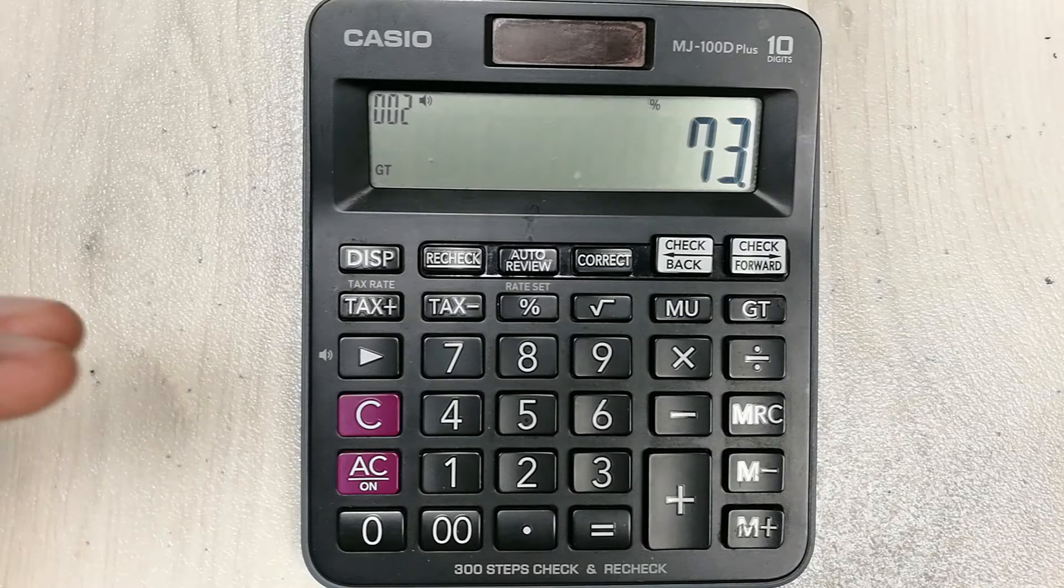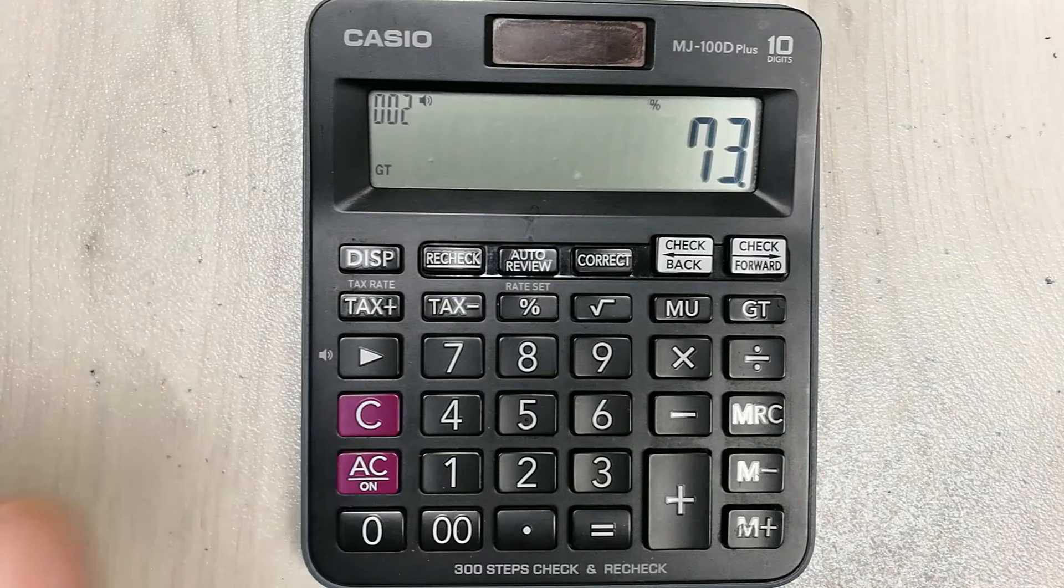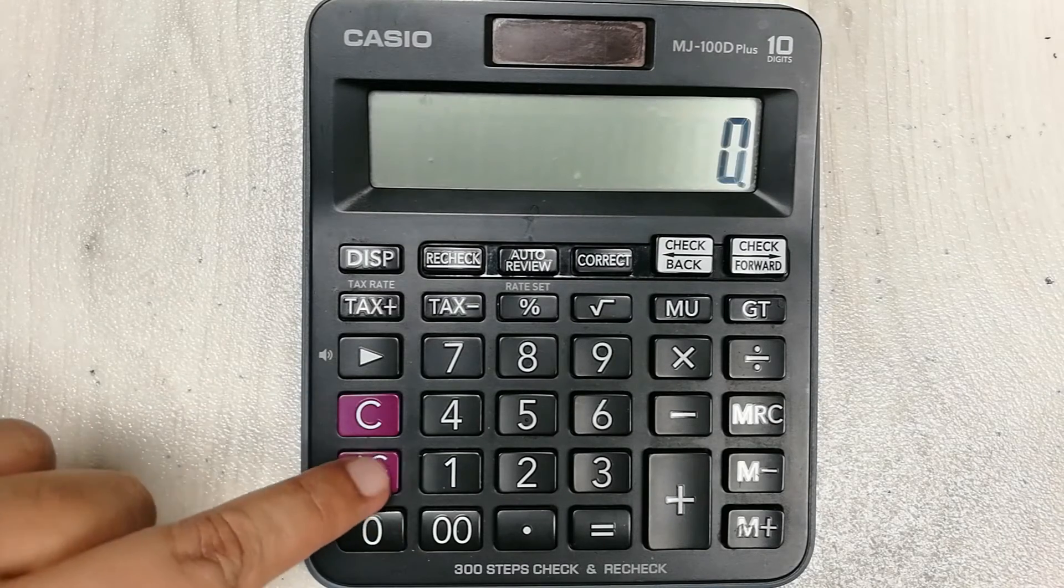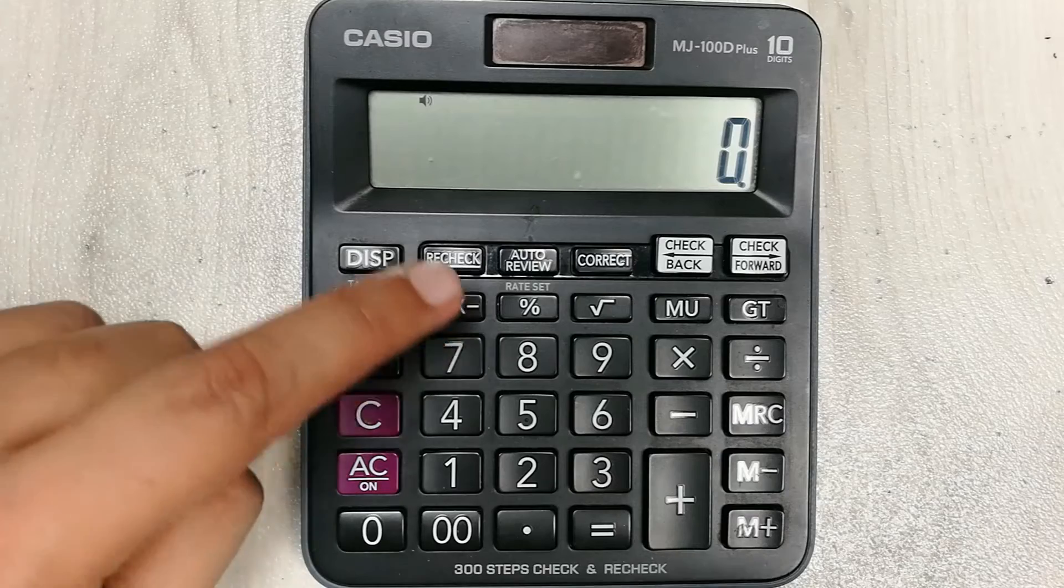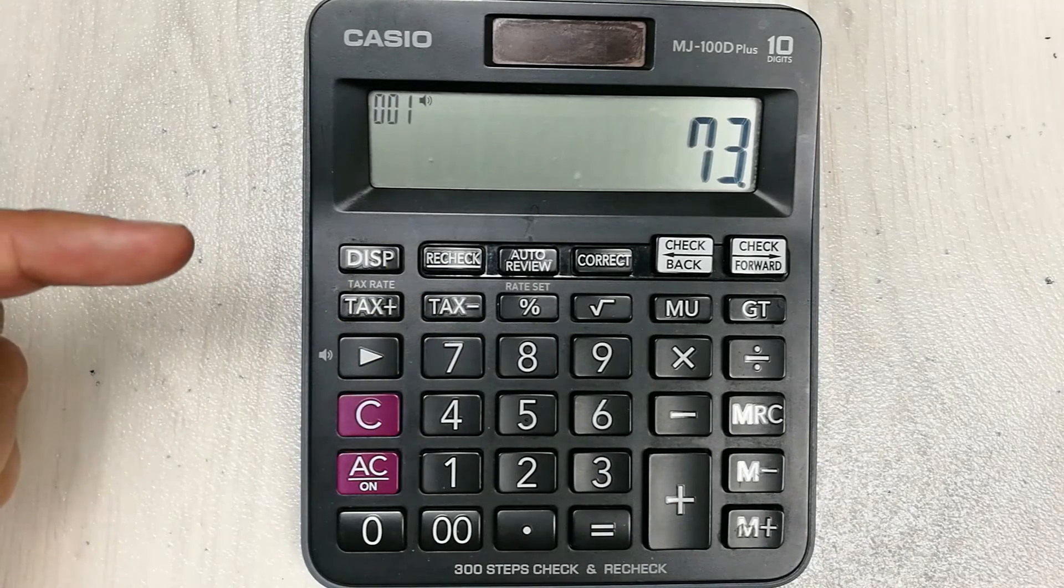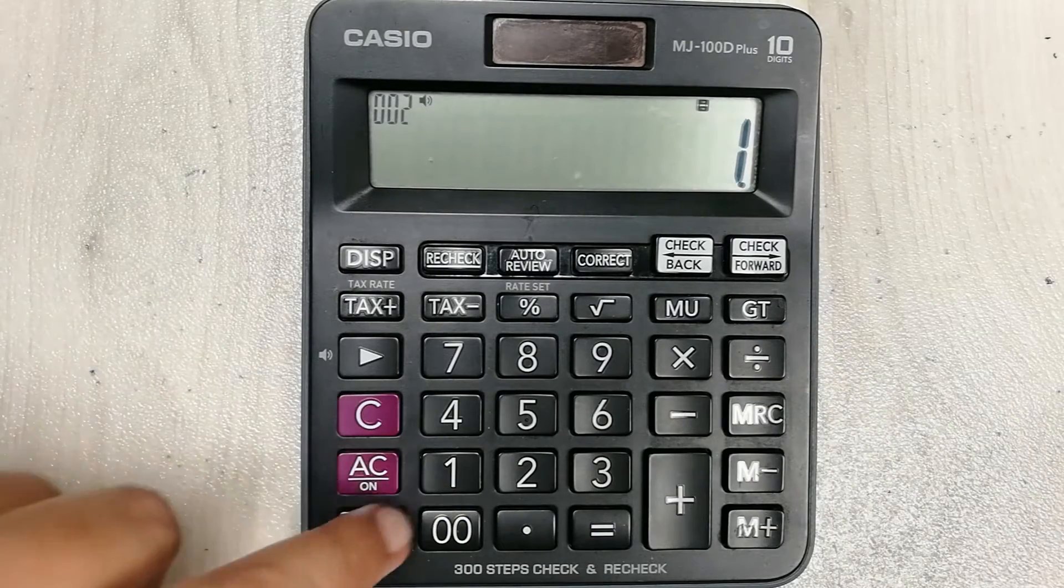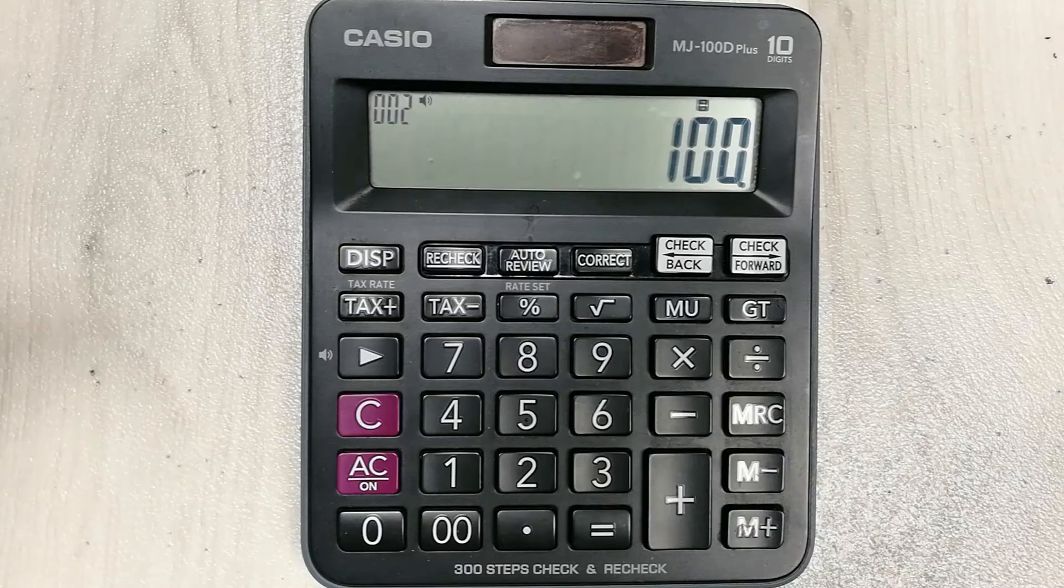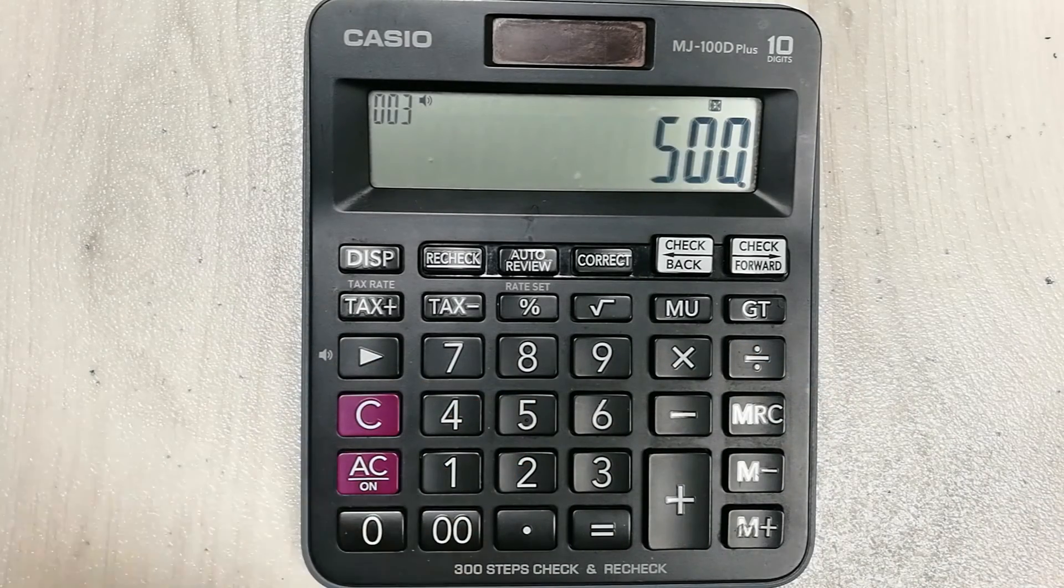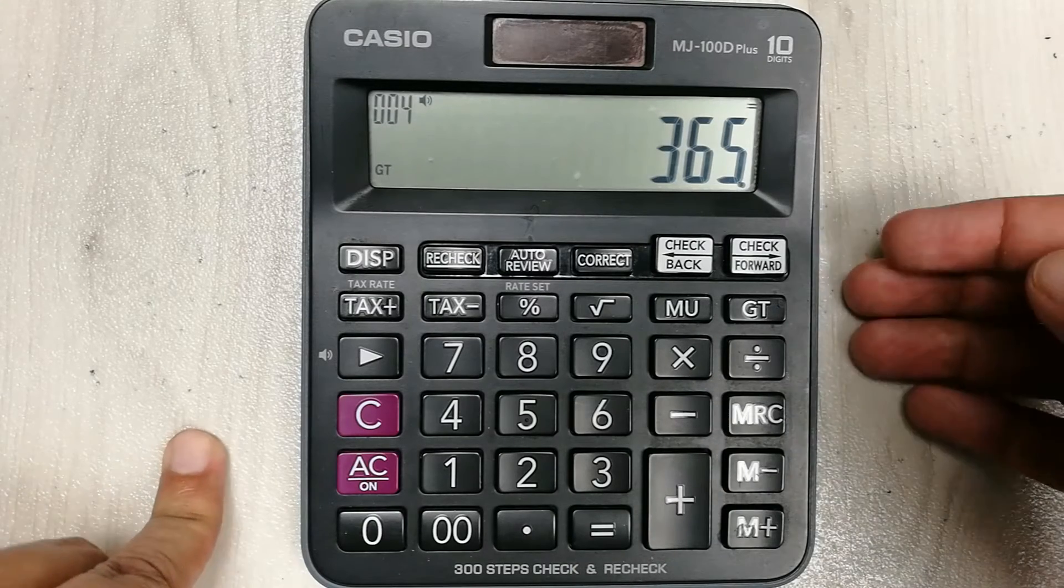For example, your total marks are 500. So what you will do is press this AC or ON button to clear everything. Now you press 73 because you got 73 percent marks, divide with 100, and multiply with 500 which was your total marks, and then press the equal button.